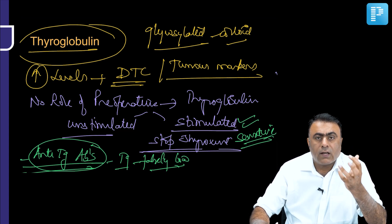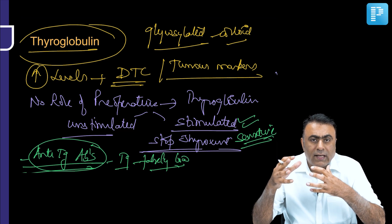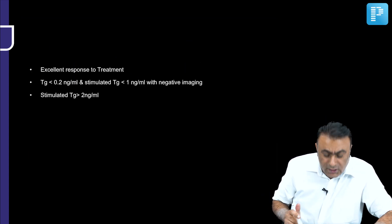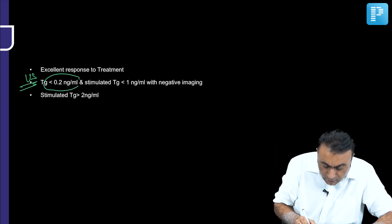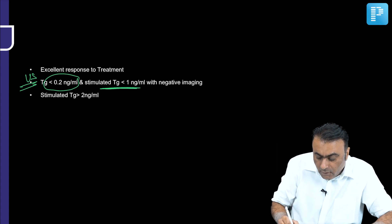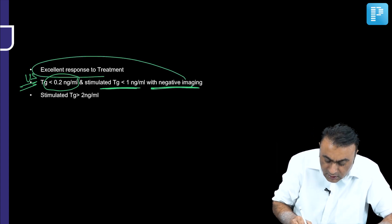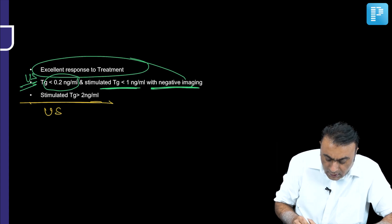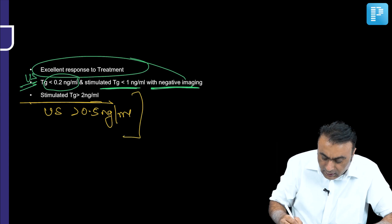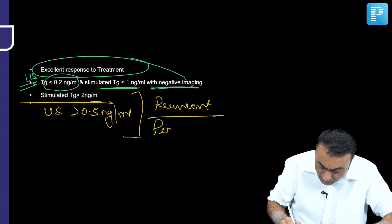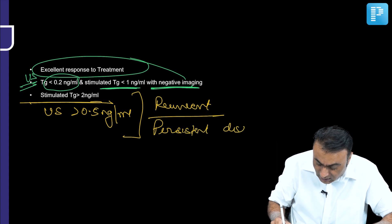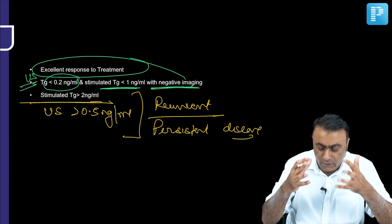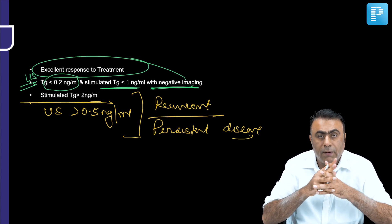What thyroglobulin levels indicate an excellent response to treatment? If the unstimulated thyroglobulin level is less than 0.2 nanograms per ml and the stimulated level is less than 1 nanogram per ml, with negative imaging, that suggests an excellent response. However, if the stimulated level is more than 2 nanograms per ml or the unstimulated level is more than 0.5 nanograms per ml, that indicates recurrent or persistent disease.